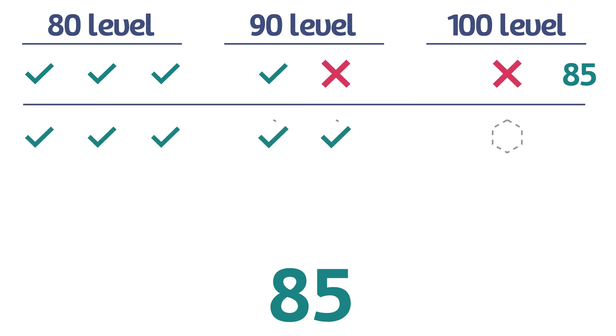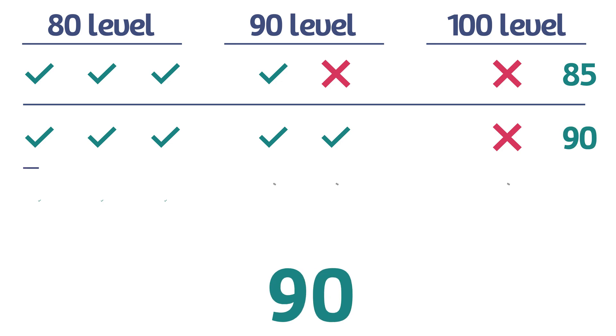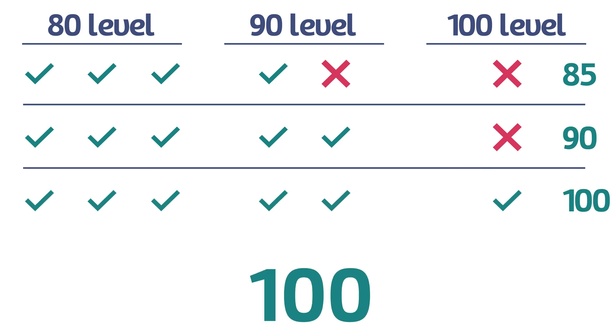If students get both 90-level questions correct but the 100 wrong, then they receive a 90. And of course, if all questions are correct, they receive a 100.